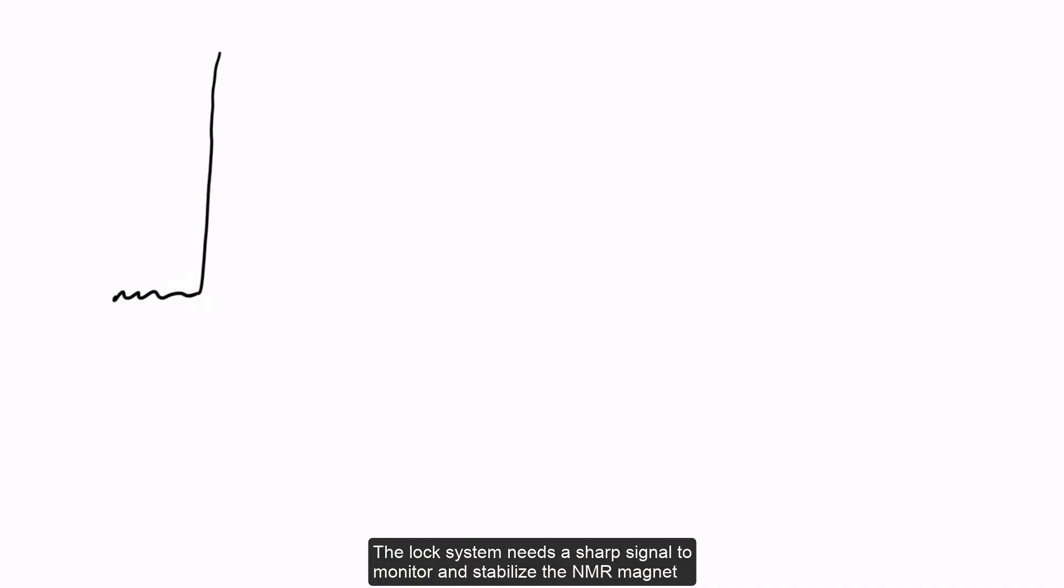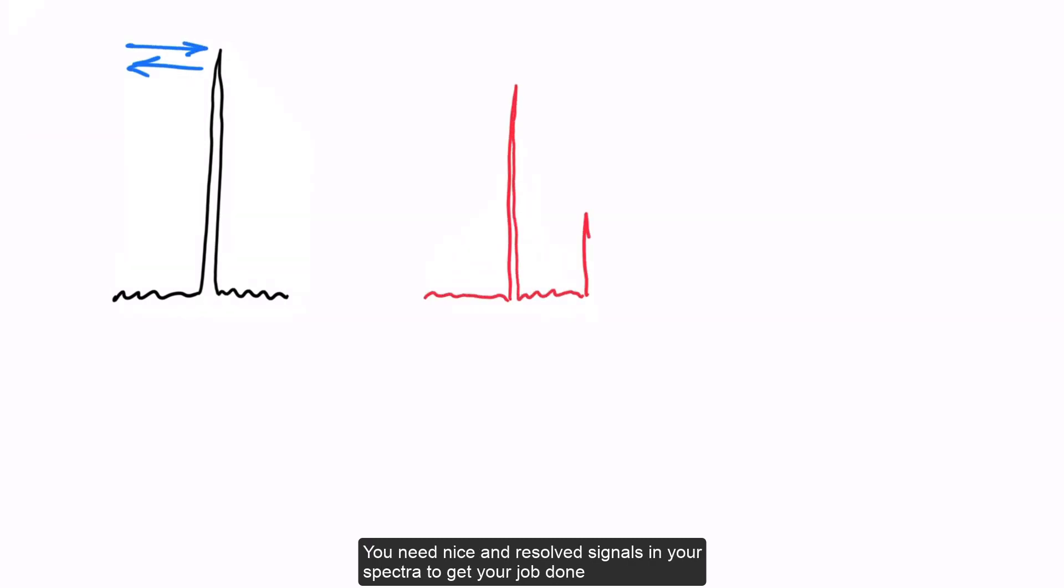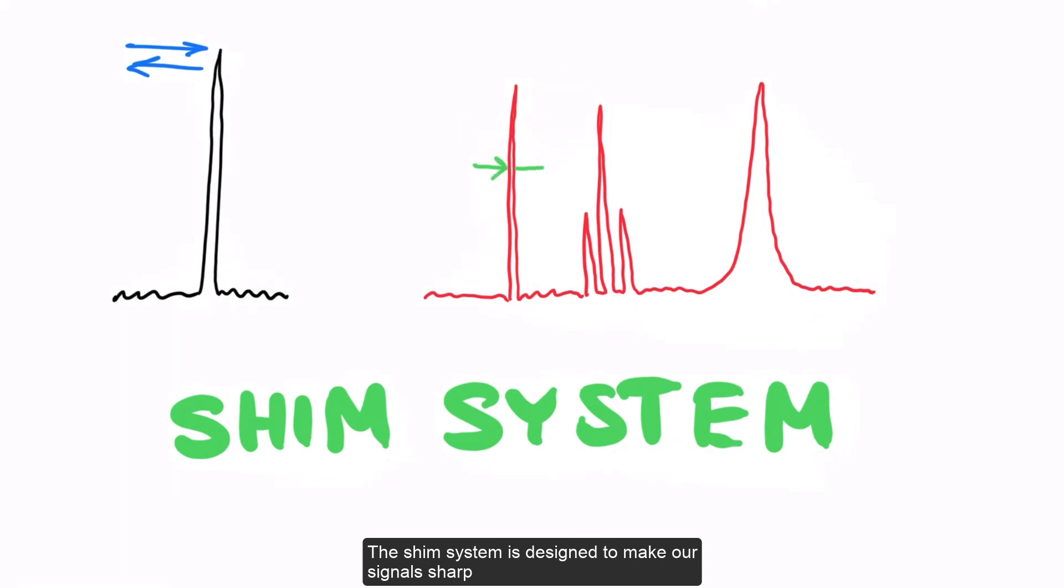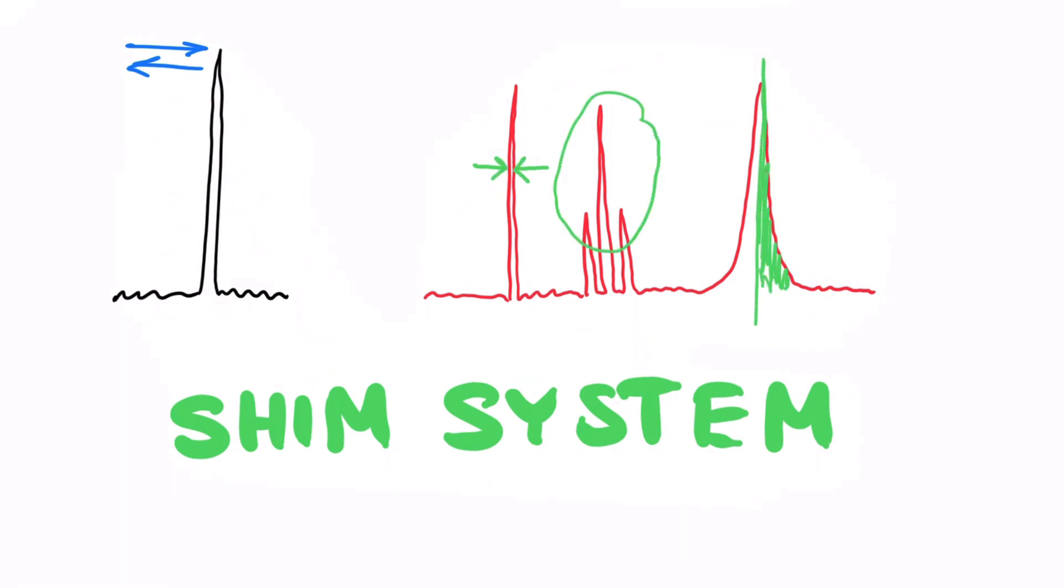The lock system needs a sharp signal to monitor and stabilize the magnet. You need nice and resolved signals in your spectra to get your job done. The Shim System is designed to make our signal sharp, symmetrical and well resolved. Let's discuss how it achieves that.